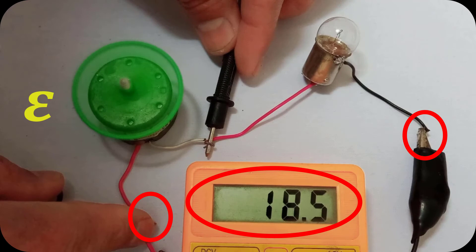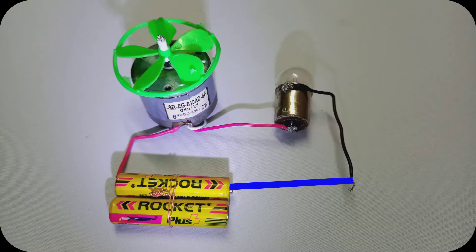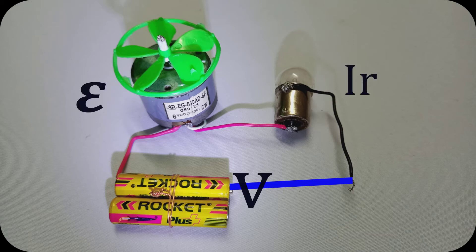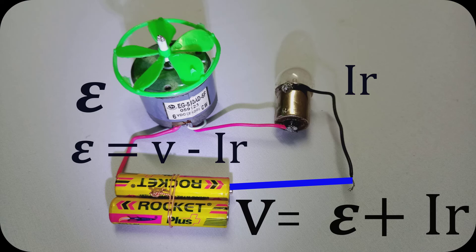The remaining voltage is balanced by the back EMF. So the applied voltage is equal to the back EMF plus the voltage drop across the resistor. From this relation, back EMF equals the applied voltage minus the voltage drop across the resistor.